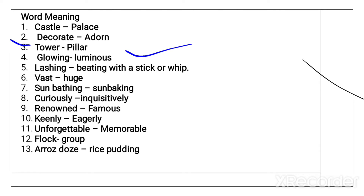Chamakdar. Lashing means beating with a stick or whip. When we beat something with a stick, that is known as Lashing. Vast means Huge.